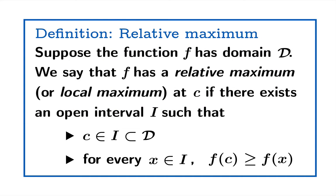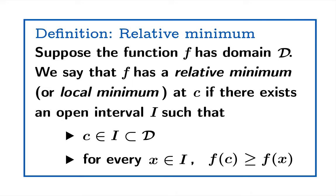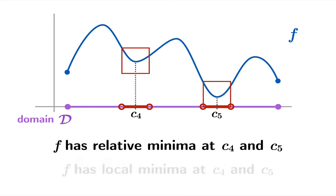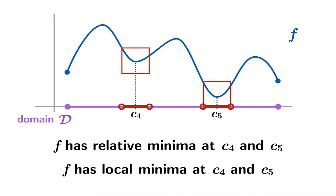We can modify this definition very obviously for the minimum case. We swap out maximum for minimum, and the only thing we change in the definition is replacing f(c) ≥ f(x) with f(c) ≤ f(x). That's what we mean by relative minimum. Back to our example, there are two relative minima at arguments c4 and c5, or equivalently f has local minima at c4 and c5.